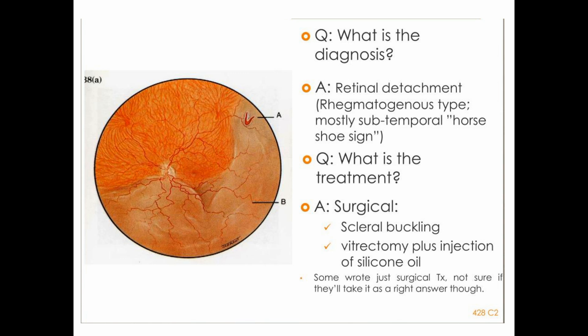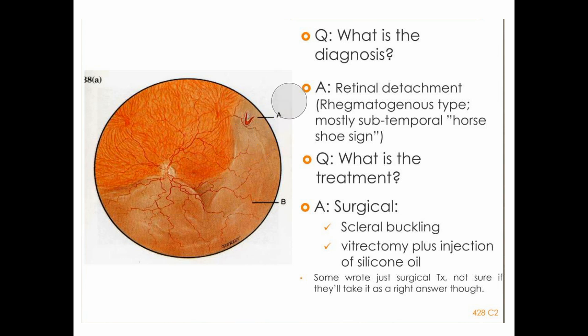What are the treatment options? There are two options: the first is external retinal detachment surgery, also called scleral buckling procedure. The second is vitrectomy plus injection of silicon oil into the vitreous cavity, with endolaser applied all around the tear. So this is your next station.